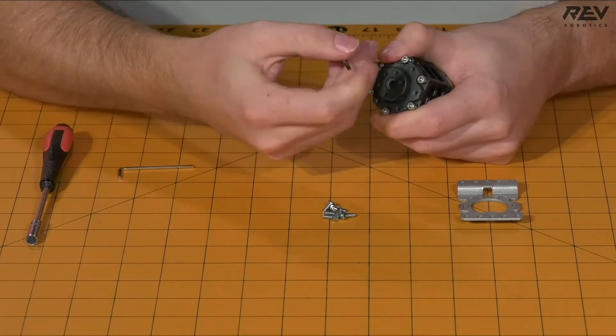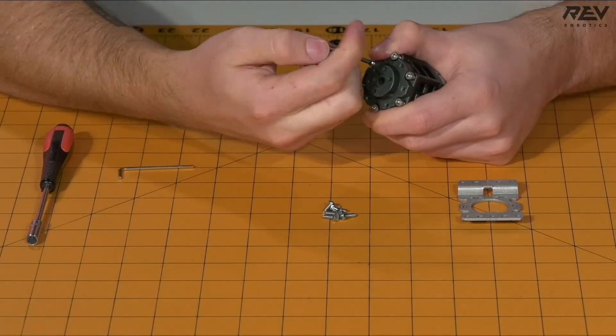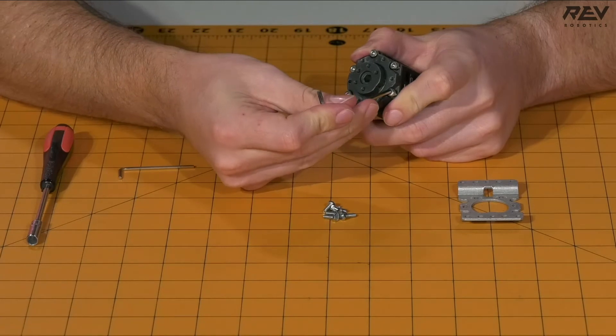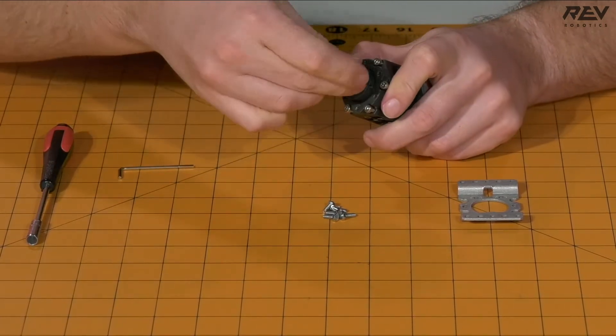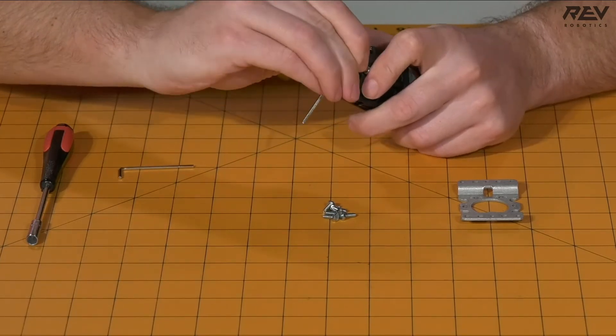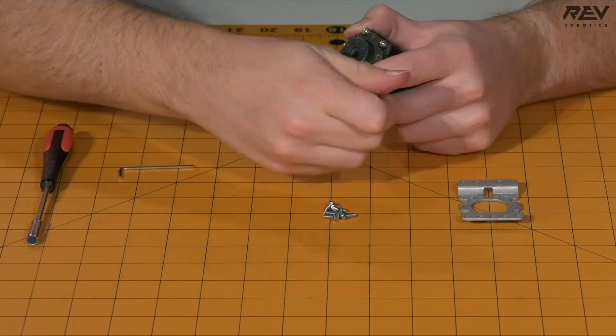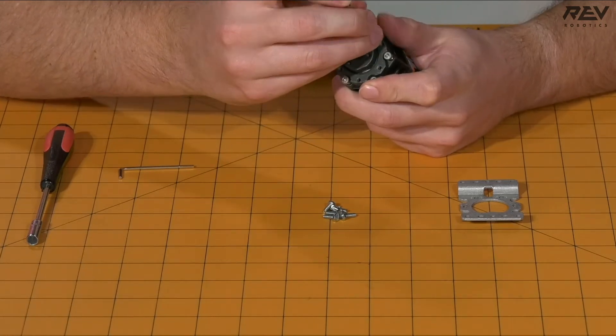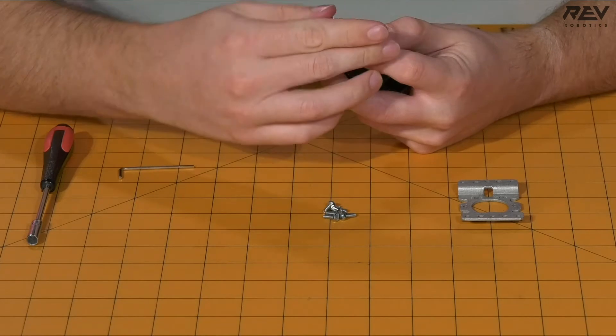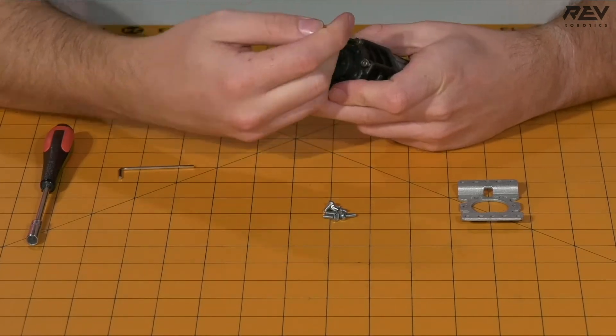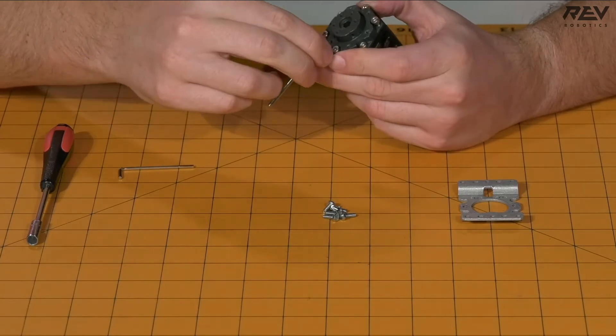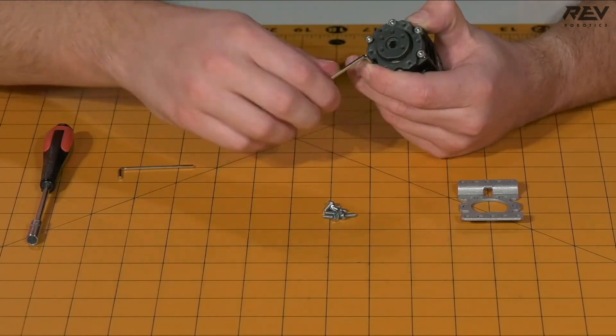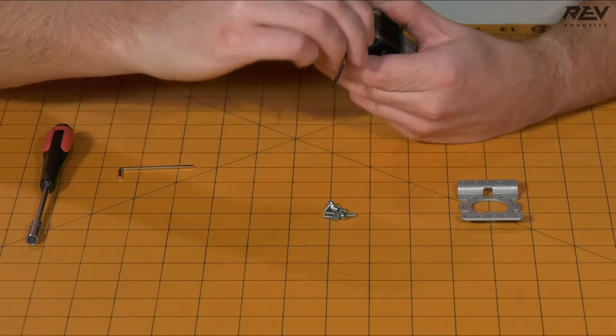You're going to want to start with any of the screws and get that tightened in relatively snug. Then you're going to want to go to the opposite end screw and tighten that one down. After that one is in, you're going to want to choose another one on the other opposite end and continue in this pattern for all of the screws that are on the ultraplanetary output. This way, the output cartridge will seat evenly and apply pressure evenly across your gearbox.